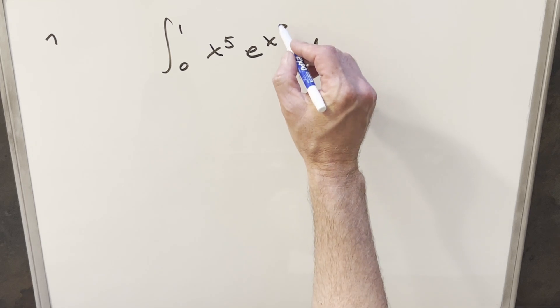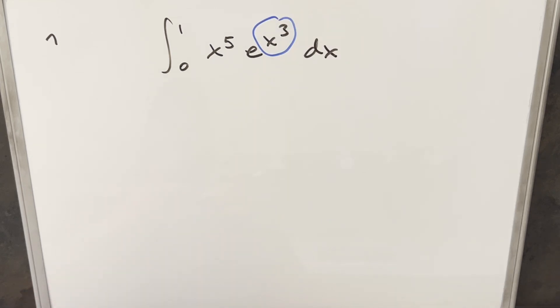We have the integral from zero to one of x to the fifth times e to the x cubed dx. To get started with this, the thing that stands out really is this x cubed. We really don't want that there. We'd like that just to be like e to the x or e to the minus x or something.